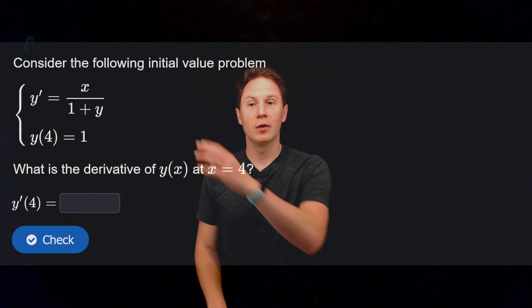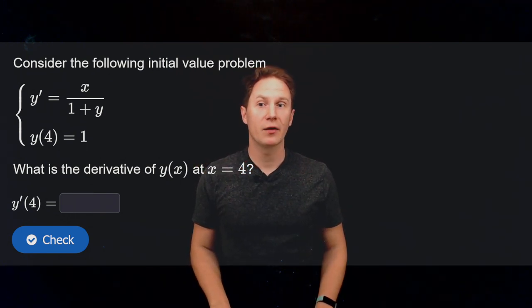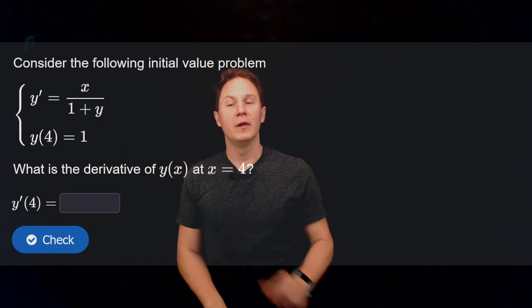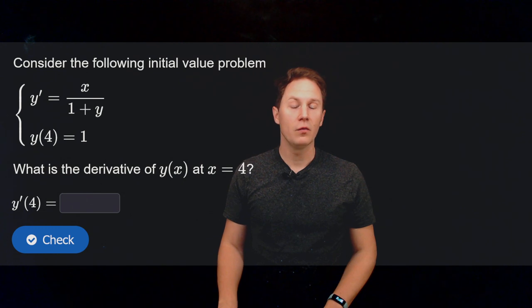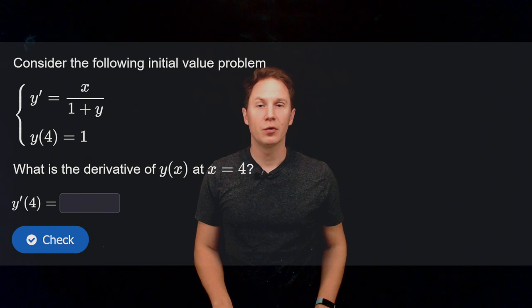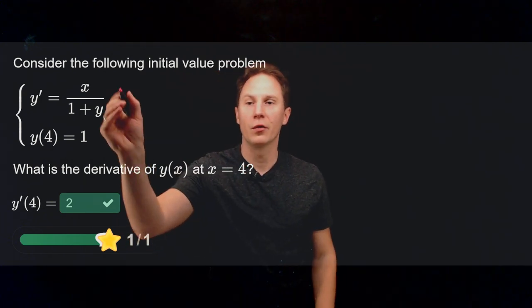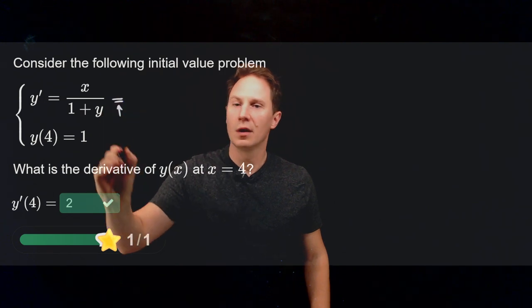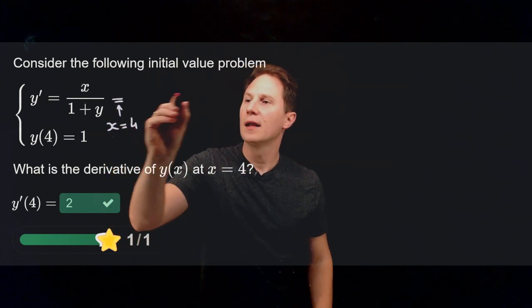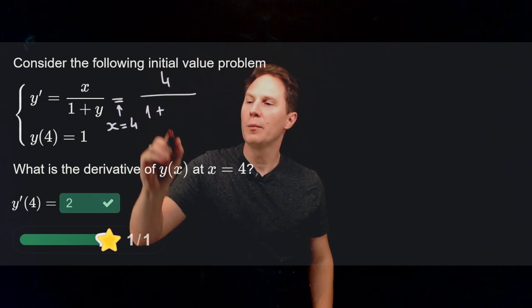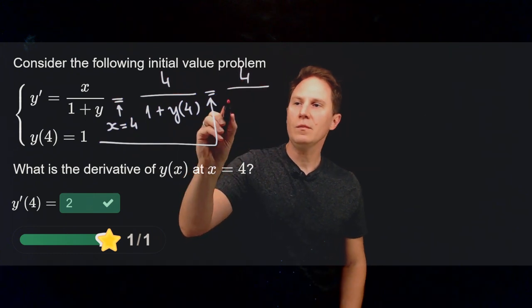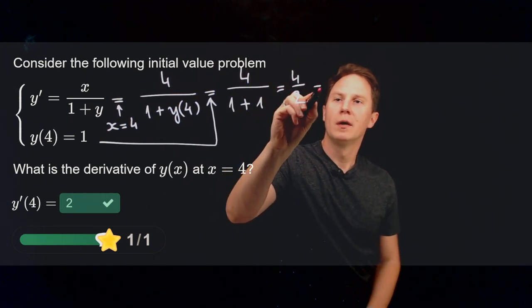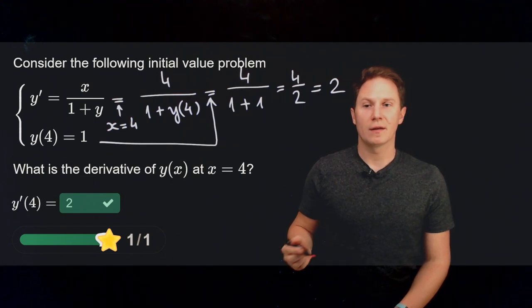Consider the following initial value problem: the differential equation y prime equals x divided by 1 plus y, with initial value y of 4 equals 1. We want to determine y prime at x equals 4. We use the equation setting x to be 4: in the numerator we get 4, and in the denominator we get 1 plus y of 4, which we know to be 1. So we get 4 over 1 plus 1, that is 4 over 2, that is 2. Therefore the derivative of the unknown function at x equals 4 is 2.